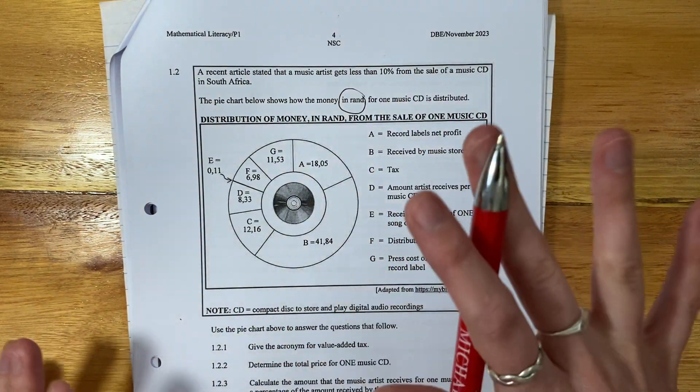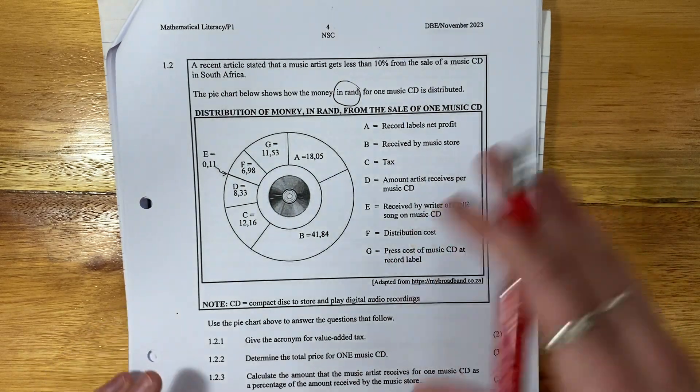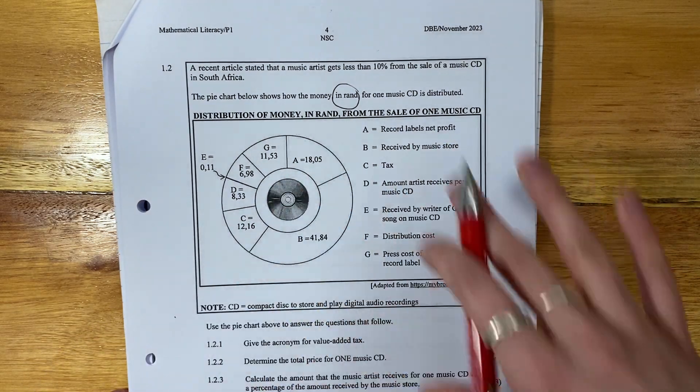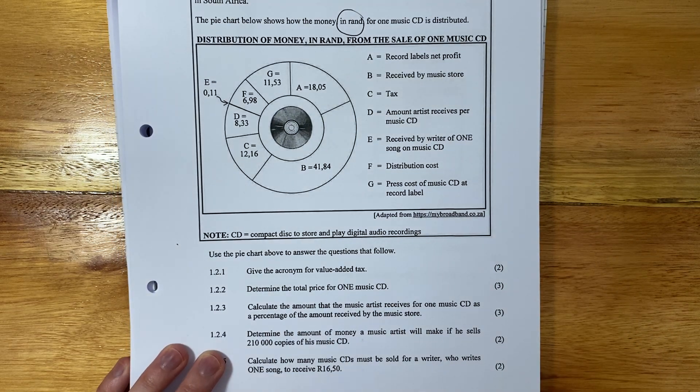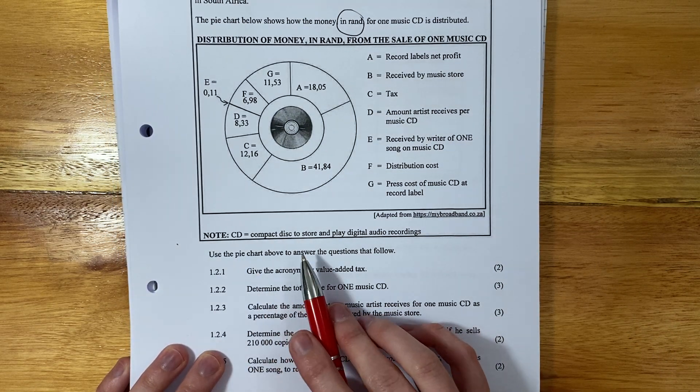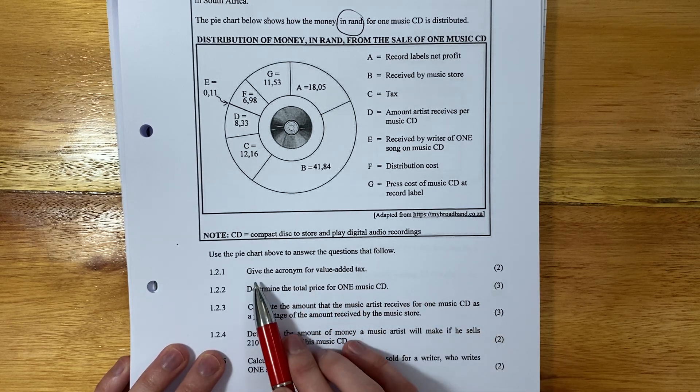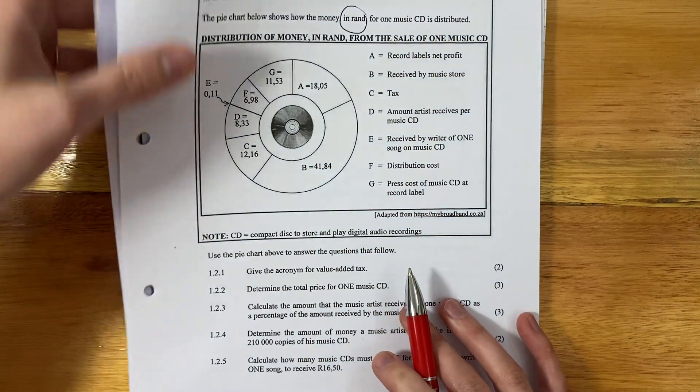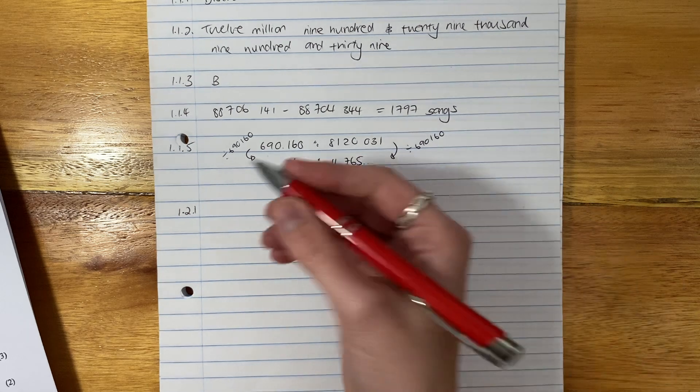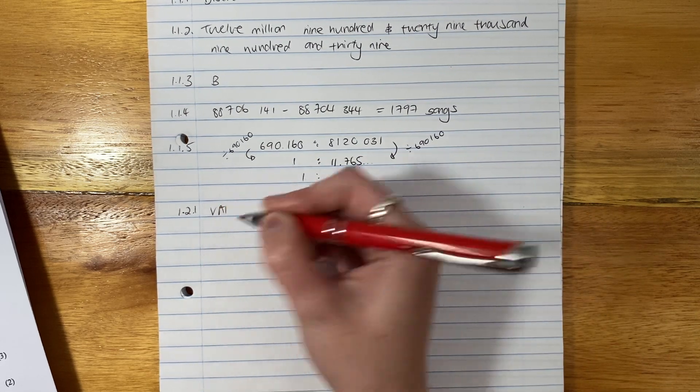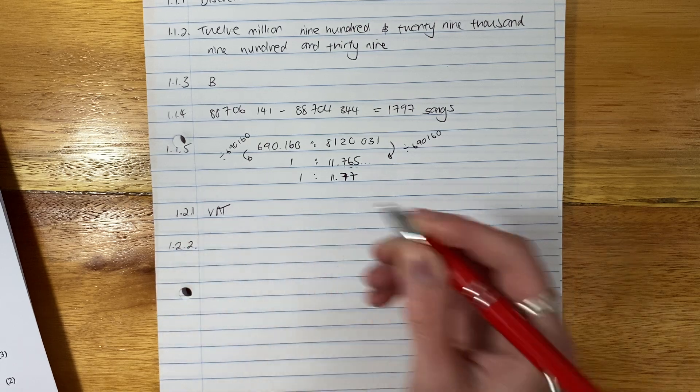Okay, there's all my labels. Fantastic. Remember, I said don't spend too much time getting through the information. Just kind of look at it and then go straight to the questions. Let's look at the first question: use the pie chart above to answer the questions that follow. So this is give the acronym for value-added tax. Now, it's not a difficult one. You just look at the first letters of each of the words there, and it is VAT.